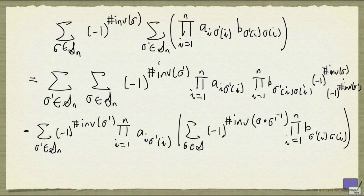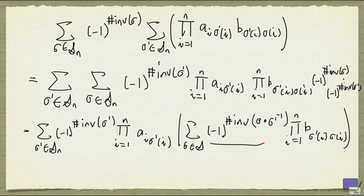So I've rewritten things a little bit. The biggest change is this. So this term here, minus 1 to the number of inverse of sigma, composed with sigma prime inverse, is going to be the same as this.